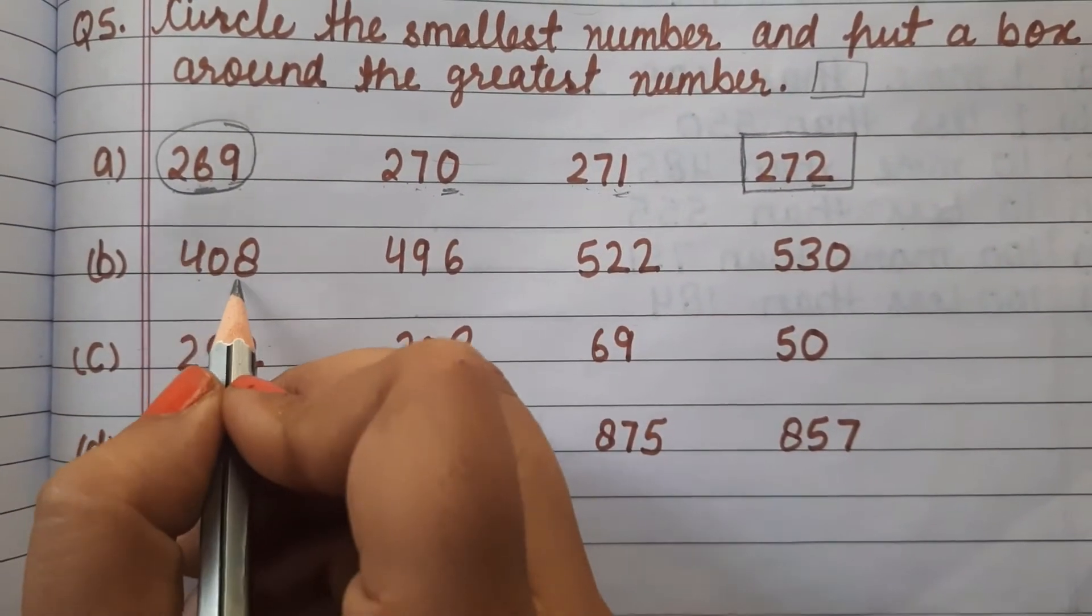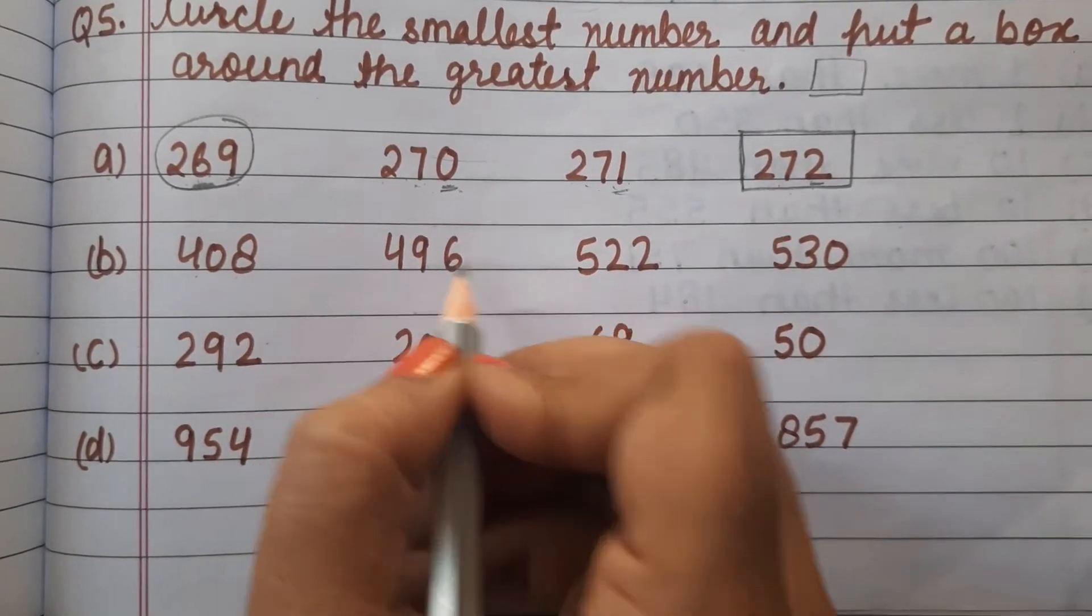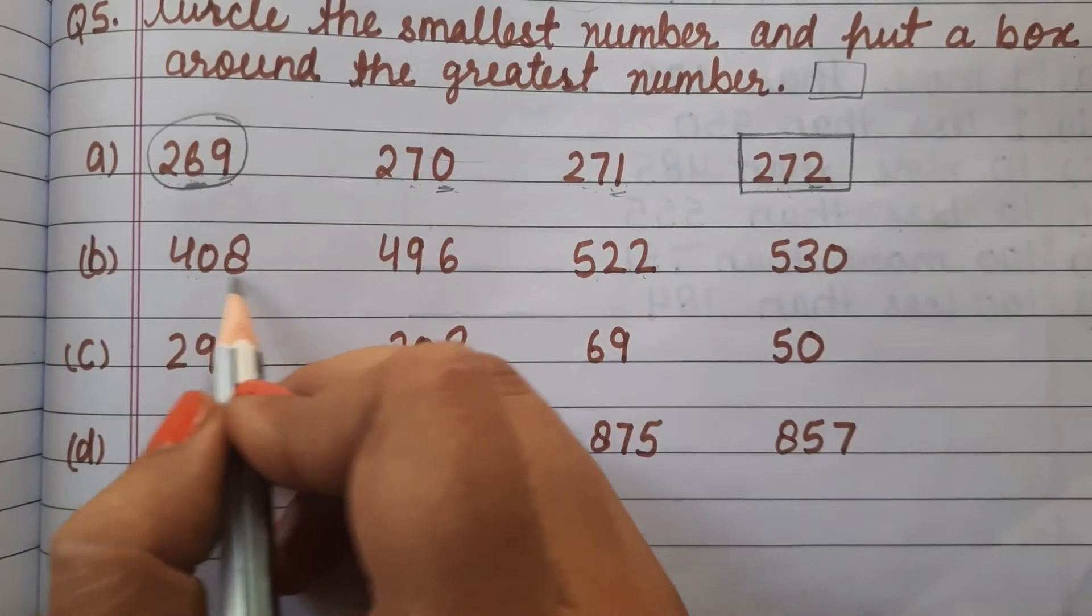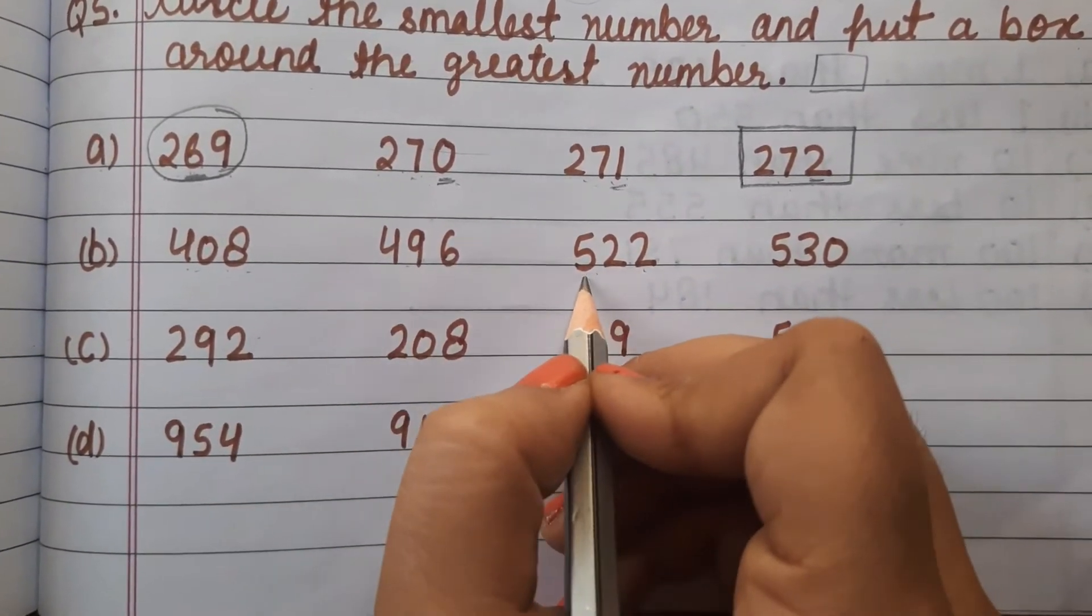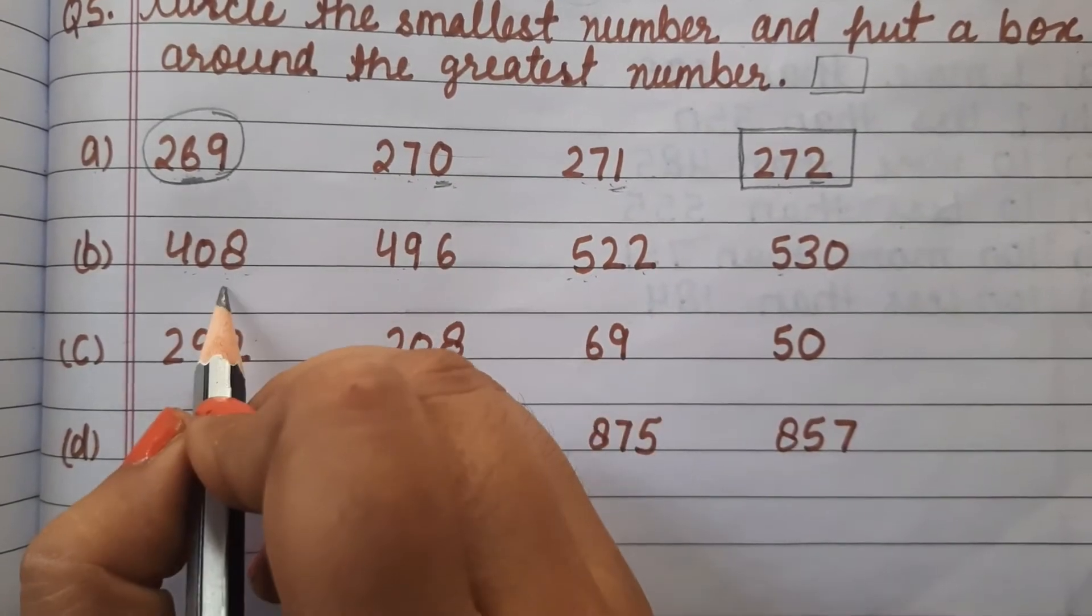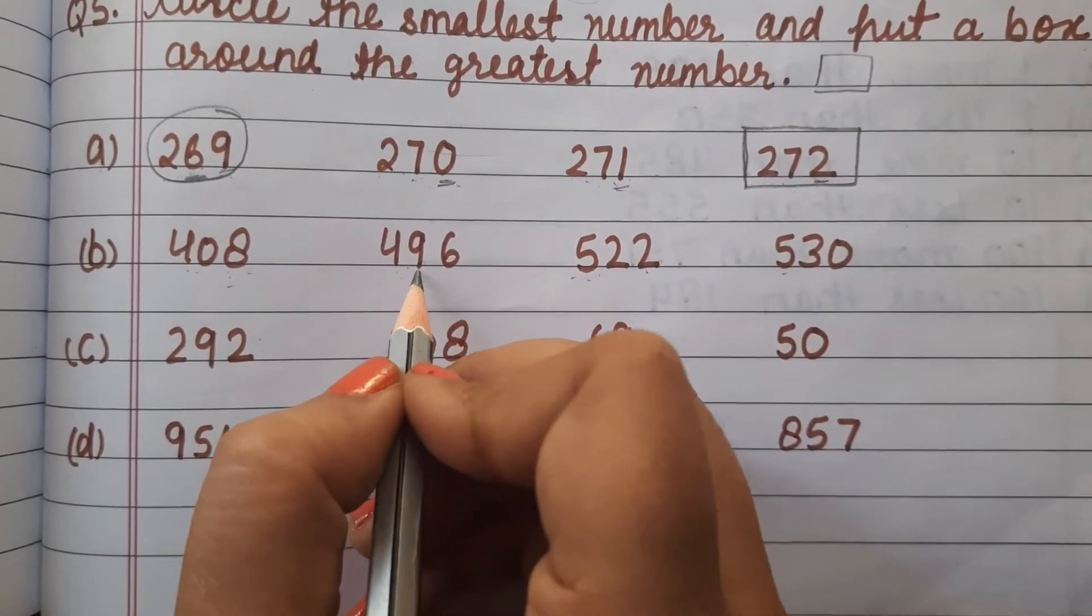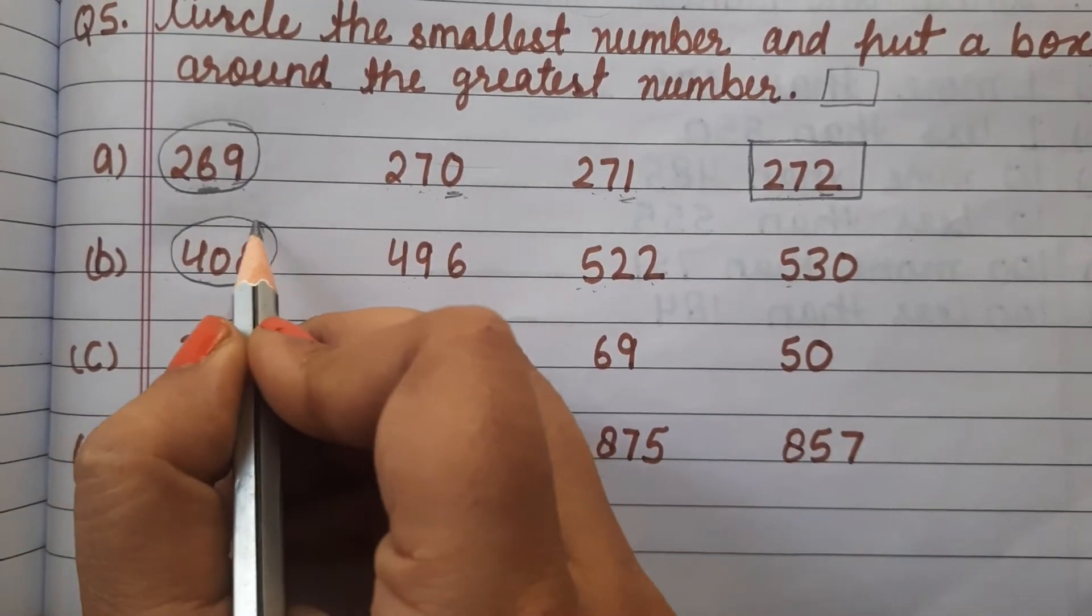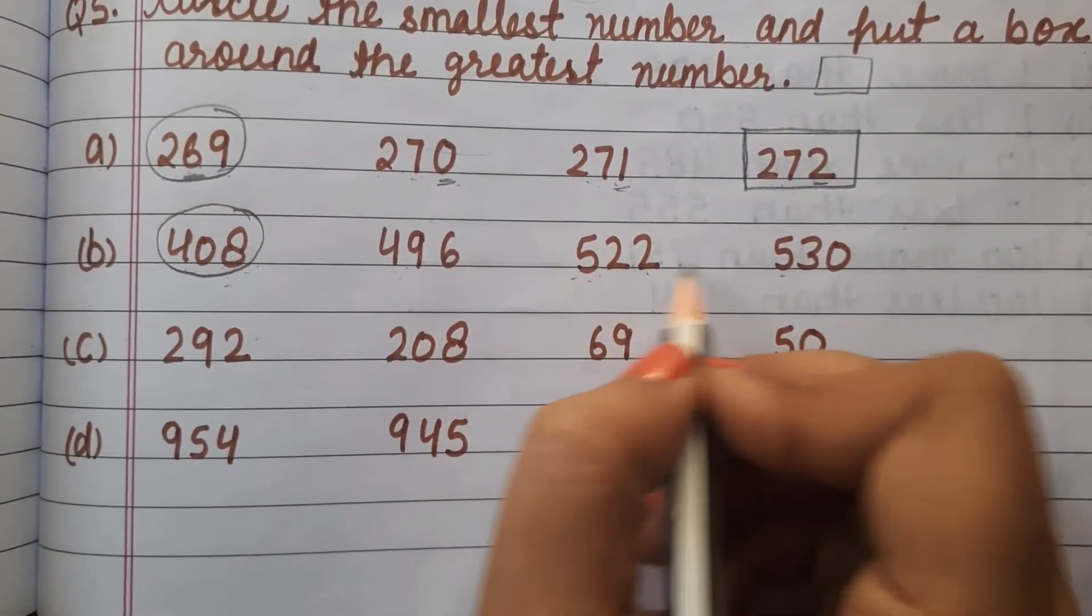Part (b): 408, 496, 522, 530. Let's compare these four numbers. 408 and 496 both have 4 in the hundreds place. Between these two, 408 is smaller and 496 is larger.